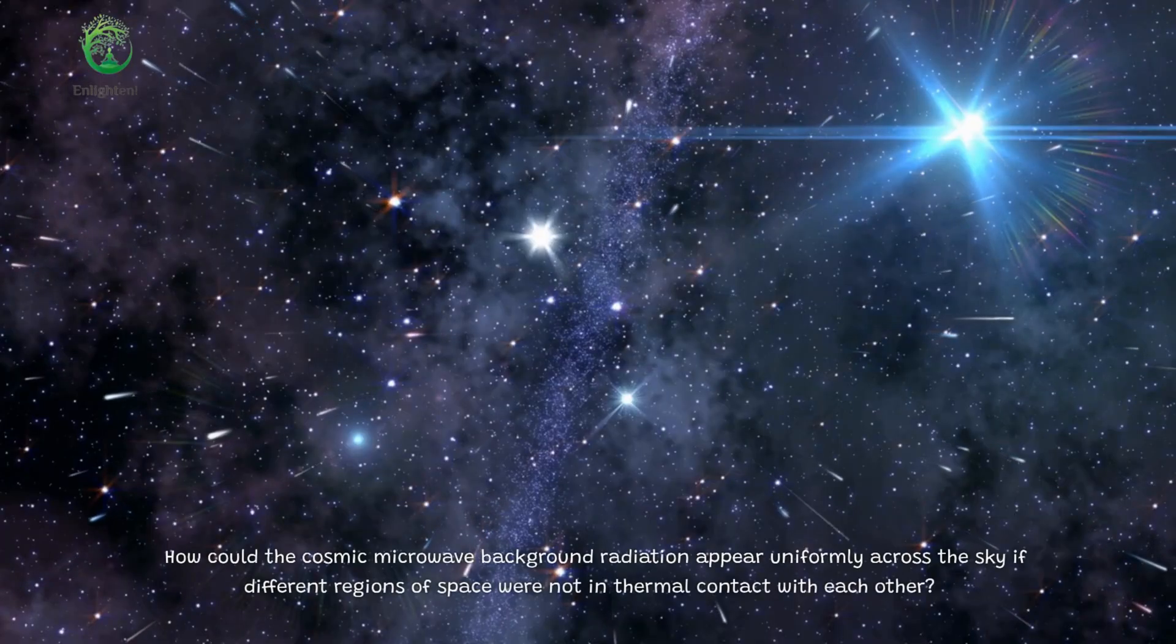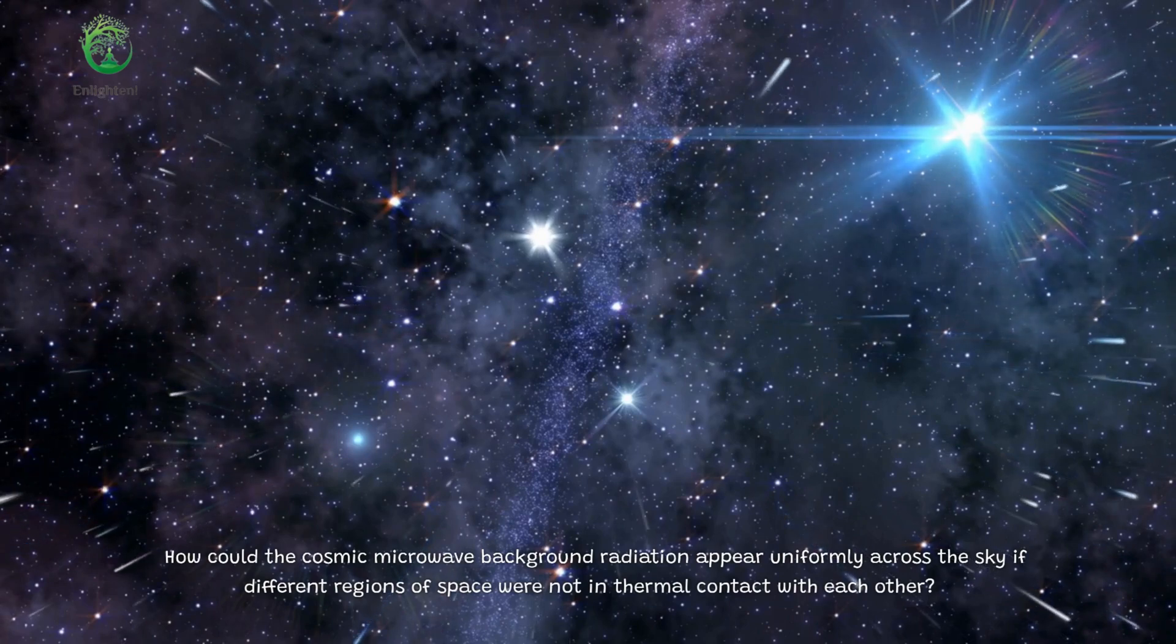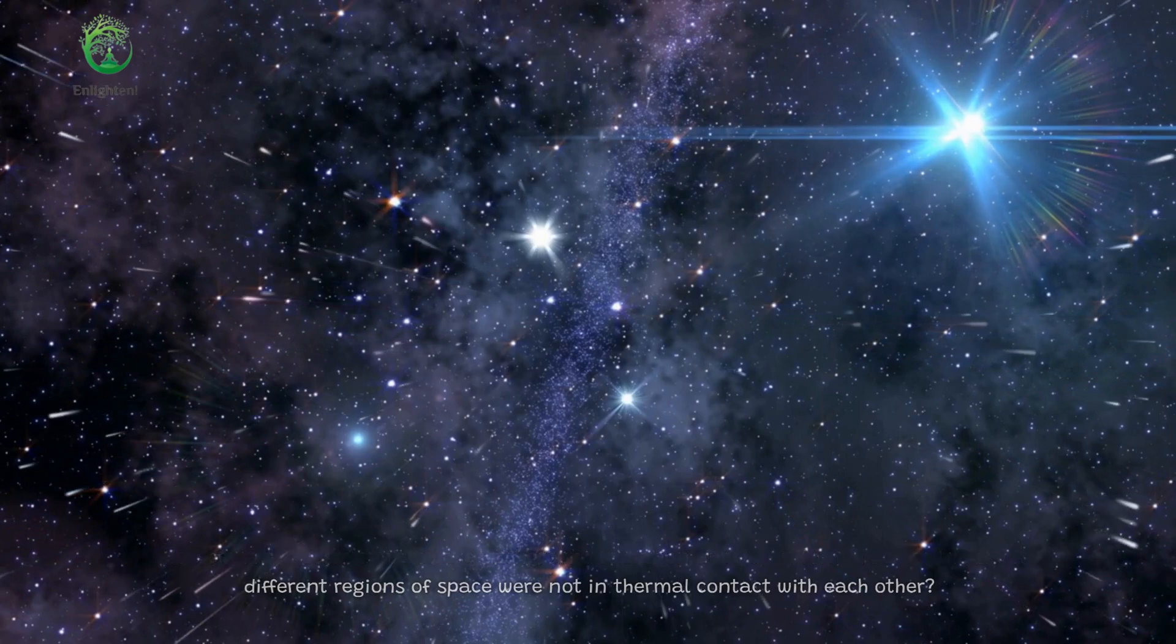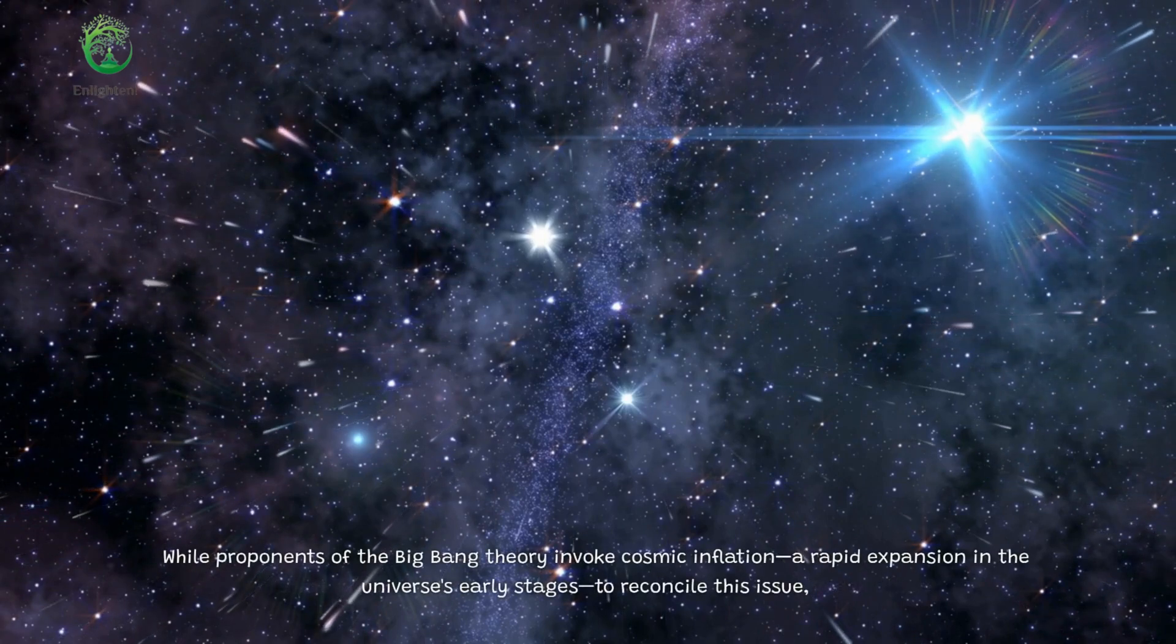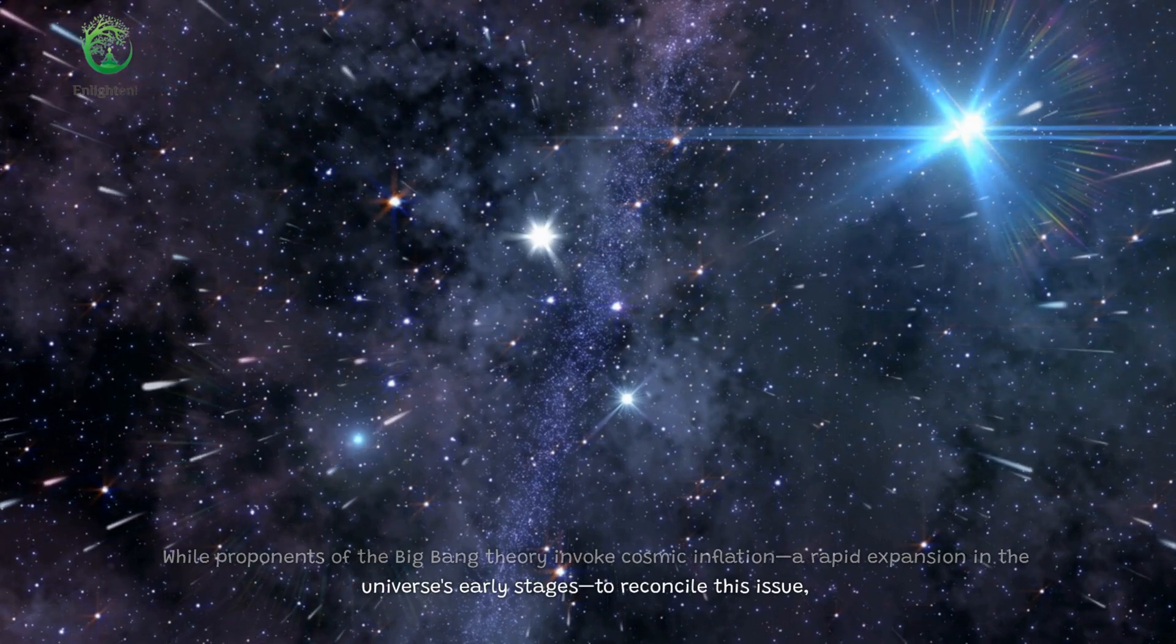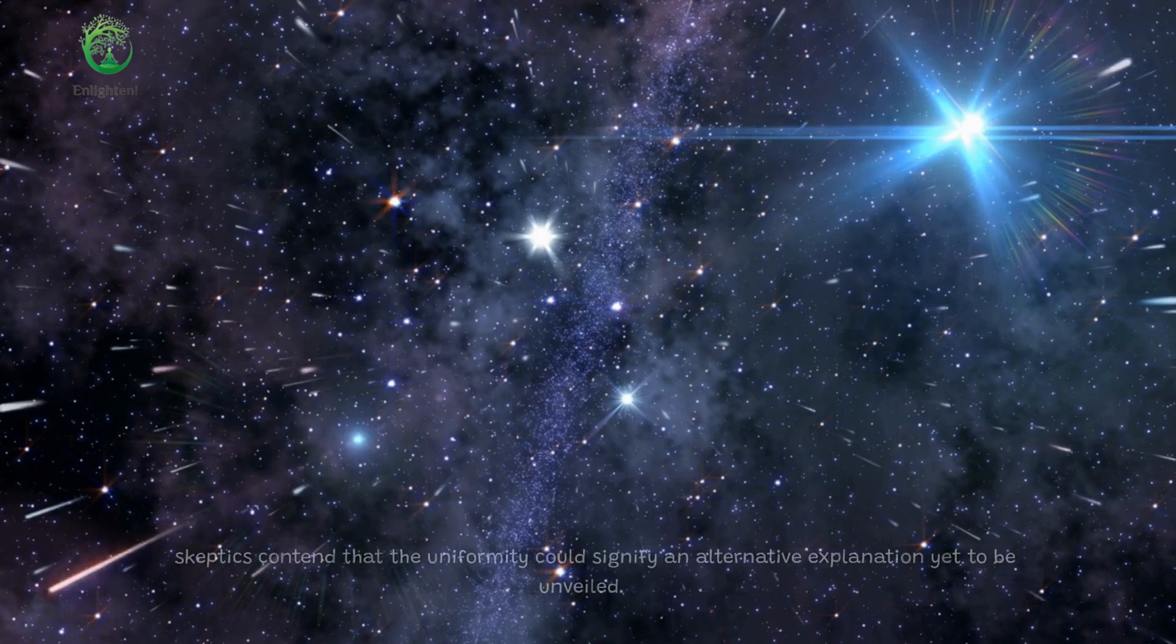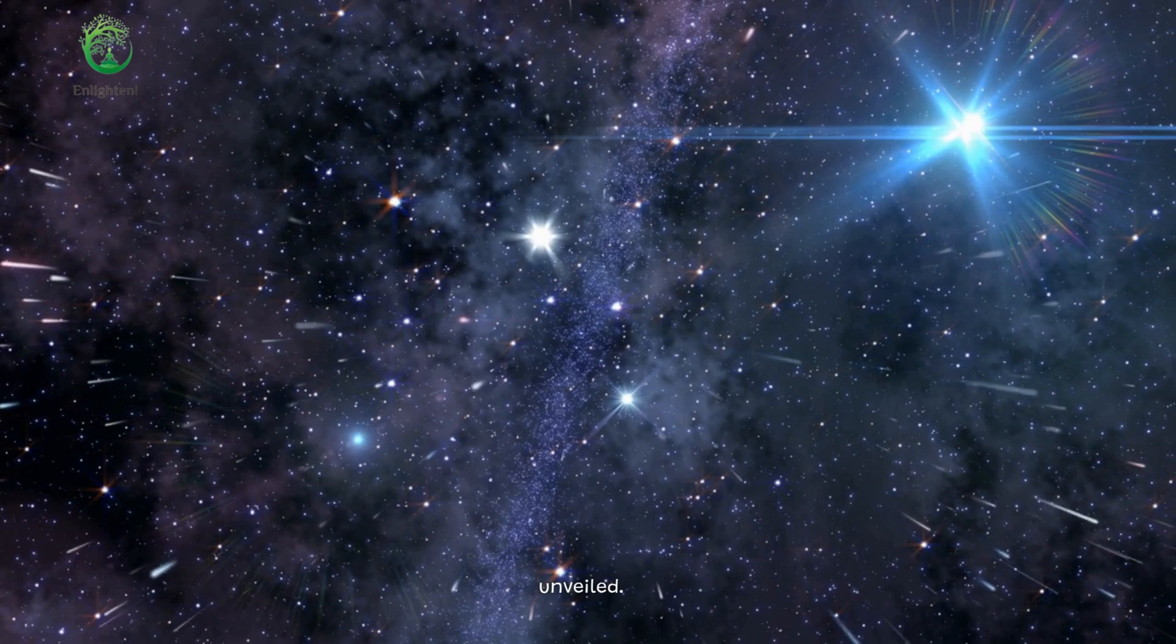Another issue concerning the Big Bang Theory is the horizon problem, an imbalance in thermal contact. How could the cosmic microwave background radiation appear uniformly across the sky if different regions of space were not in thermal contact with each other? While proponents of the Big Bang Theory invoke cosmic inflation, a rapid expansion in the universe's early stages, to reconcile this issue, skeptics contend that the uniformity could signify an alternative explanation yet to be unveiled.